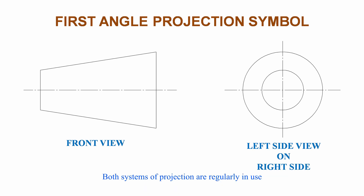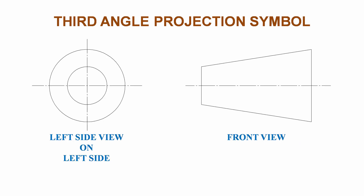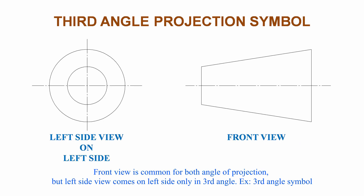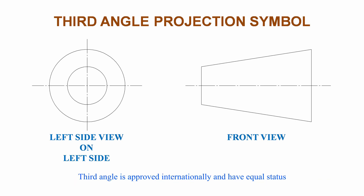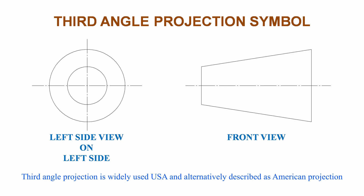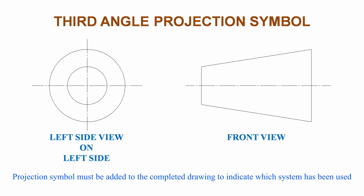Both systems of projection are regularly in use. For the third angle projection symbol, the front view is common for both angles of projection, but the left side view comes on the left side only in third angle projection. Third angle projection is approved internationally and has equal status. It is widely used in the USA and is alternatively described as American projection. The projection symbol must be added to completed drawings to indicate which system is being used.